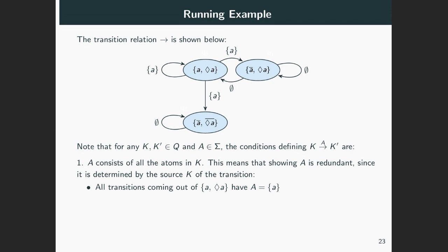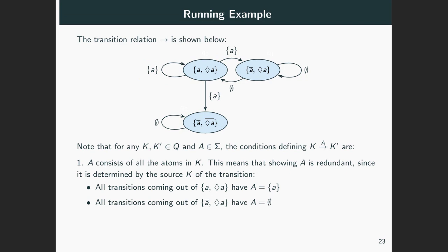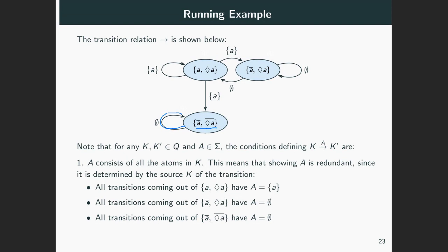For example, all transitions coming out of the state consisting of A and eventually A are labeled with the singleton A set — we have three such transitions, all labeled with the singleton A set — because the state contains exactly one atom, namely A. Also, all transitions coming out of the not A and eventually A state, a state with no atoms in it, will be labeled with empty sets. Similarly for transitions out of the not A and not eventually A state; there's only one transition and it is labeled with the empty set.